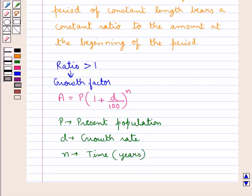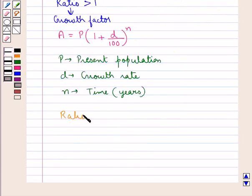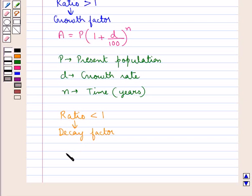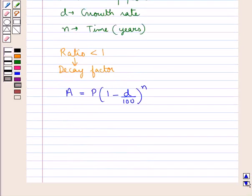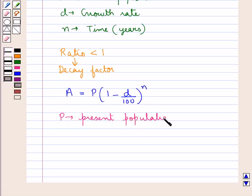And if the same ratio is less than 1, then this ratio is called the decay rate, and the law obeyed in this case is A equal to P into 1 minus D upon 100, whole to the power of N, where P is the present population, D is the decay rate, and N is the time in years.